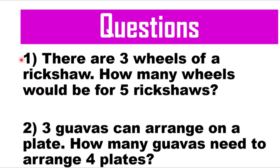In my earlier classes I mentioned that whenever you try to solve any types of problems or questions, before that you should collect the data from that particular question or math. So in this question we can see that the data mentioned here is three wheels and five rickshaws. Now, how can we connect these different data so that we can easily solve this problem?